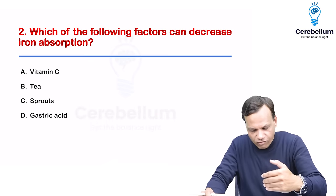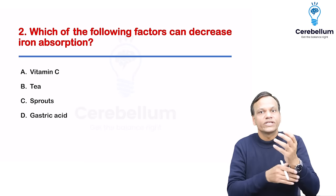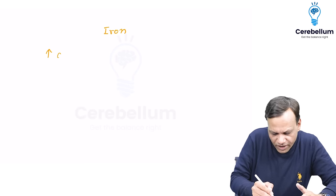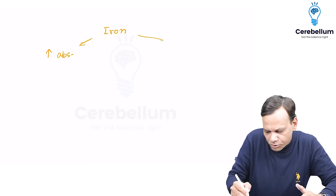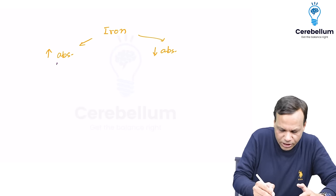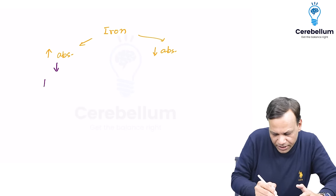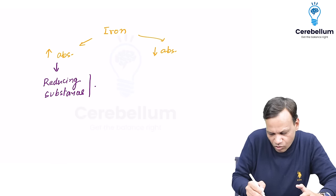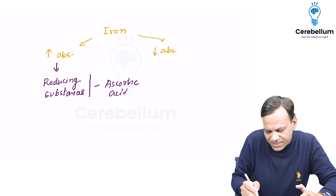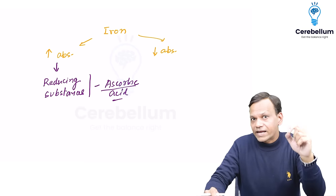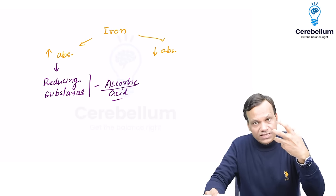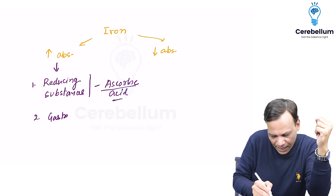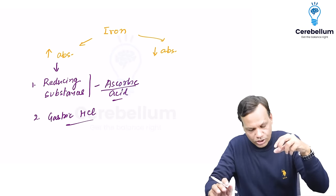Moving to the next question: which of the following factors can decrease iron absorption? Some factors increase absorption of iron and some decrease it. Factors which increase absorption include reducing substances like ascorbic acid (vitamin C) — that's why iron is taken with citrus fruits like orange juice. Gastric hydrochloric acid also increases iron absorption.